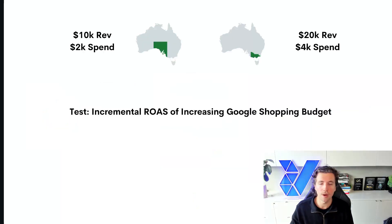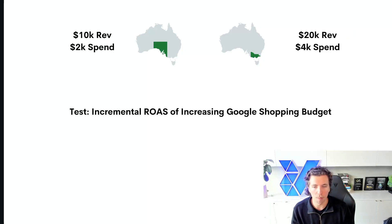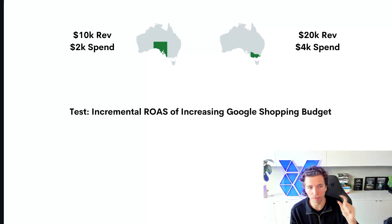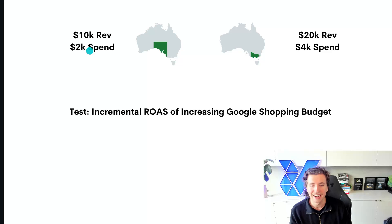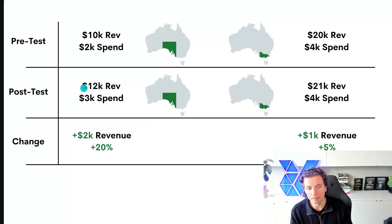Let's run through an actual example. Say you have South Australia with $10,000 in monthly revenue and $2,000 in monthly spend, and Victoria with $20,000 in revenue and $4,000 in spend. We want to test: if we put more spend into Google Shopping, what is the incremental lift on revenue? So we put an additional $1,000 into South Australia. After a month, South Australia's revenue is now $12,000 with $3,000 in spend — a lift of $2,000, or exactly 20%.